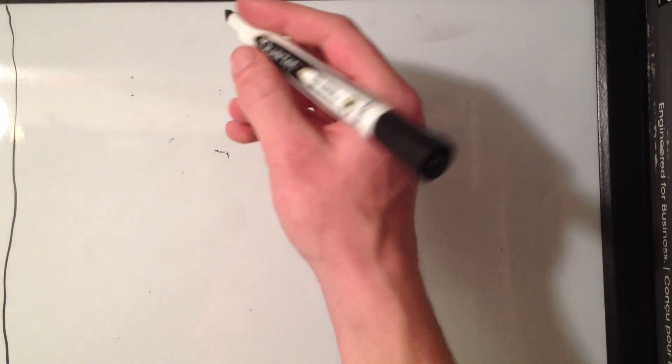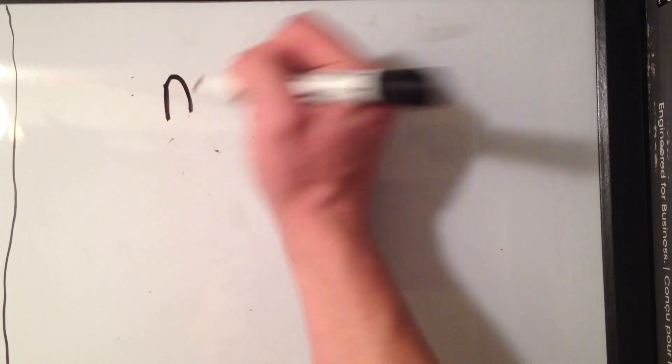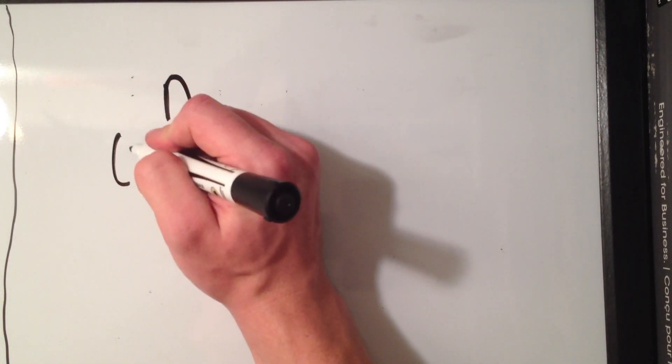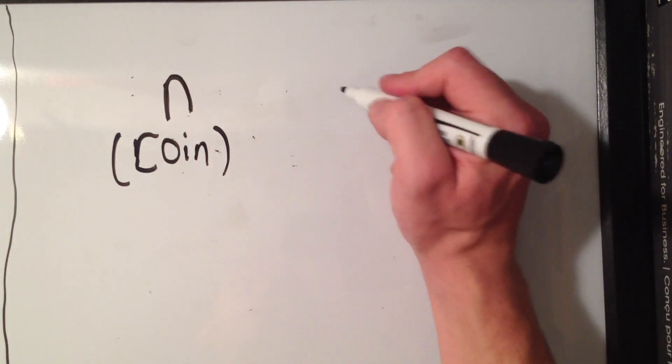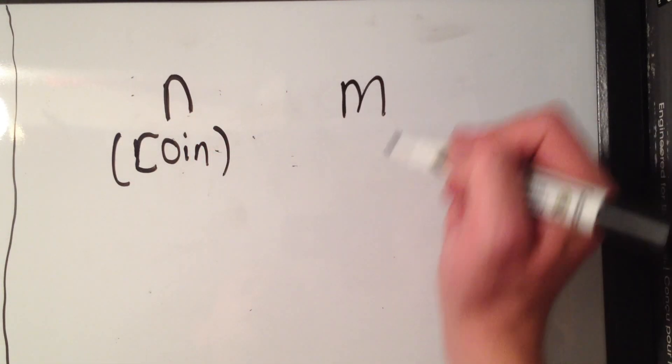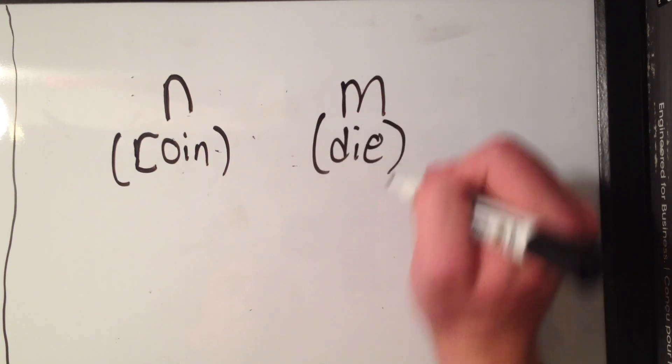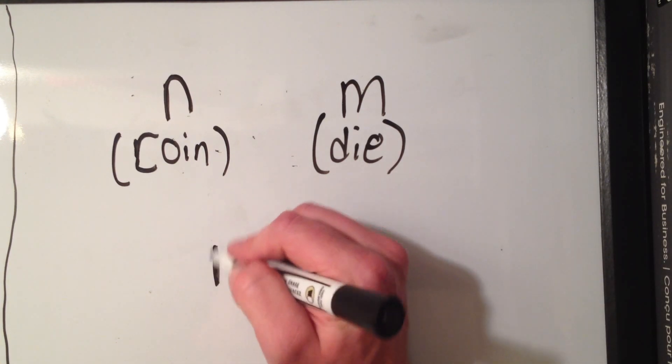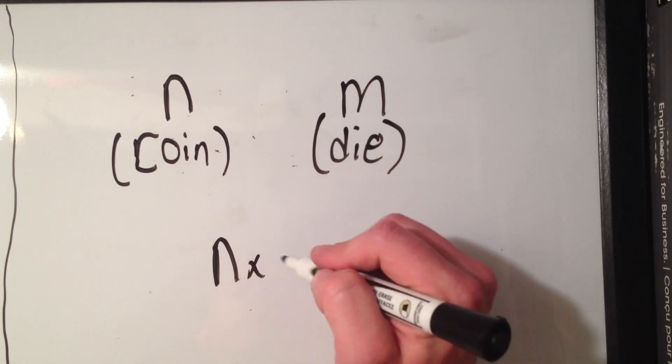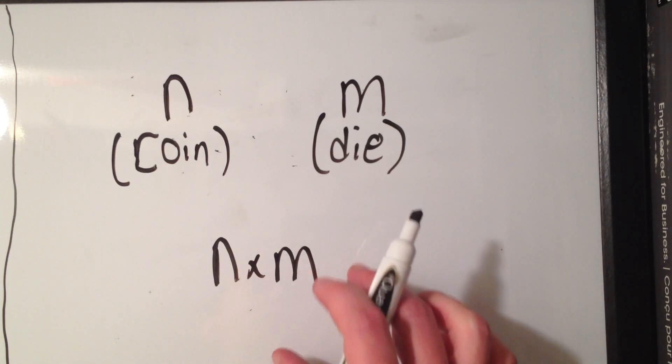So the basic principle of counting says if we have one event that can happen n ways, that's like our coin, and another event that can happen m ways, that's like our six-sided die, then the total number of outcomes is n times m. Okay, well, I hope it was helpful.